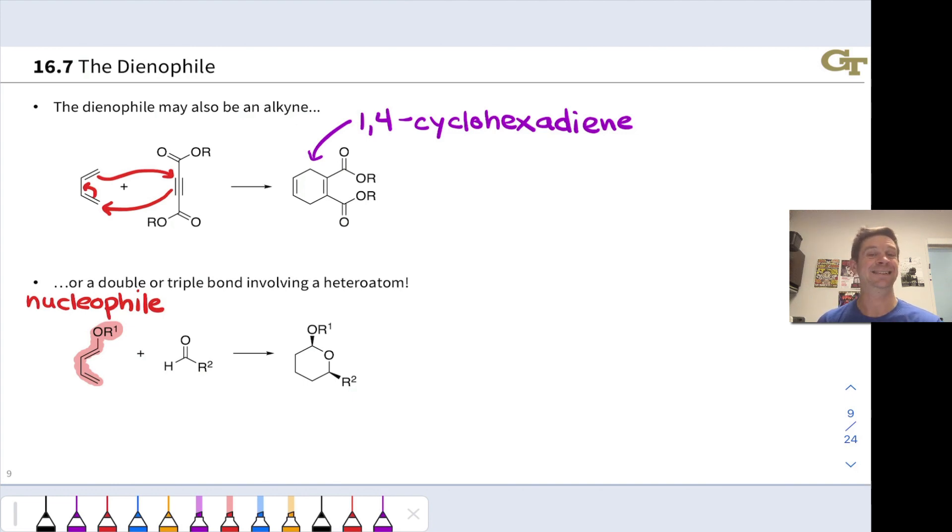This diene is electron-rich. It's nucleophilic, and it's worth pausing the video to convince yourself why that's the case. On the other hand, the 2-pi component, the carbonyl component here, is electrophilic. And again, it's worth pausing to make sure you understand why that's the case. This biasing with an electron-rich diene and electron-poor dienophile makes this reaction work fantastically.